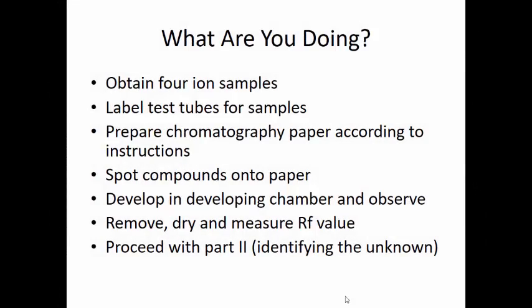So what are we going to do? We're going to obtain four ion samples. We're going to label our test tubes, prepare the chromatography paper according to the instructions in the lab manual. We're going to spot the compounds onto the paper and develop them, measure their RF, and then look at an unknown sample which you'll identify, and we're going to do the visualization.